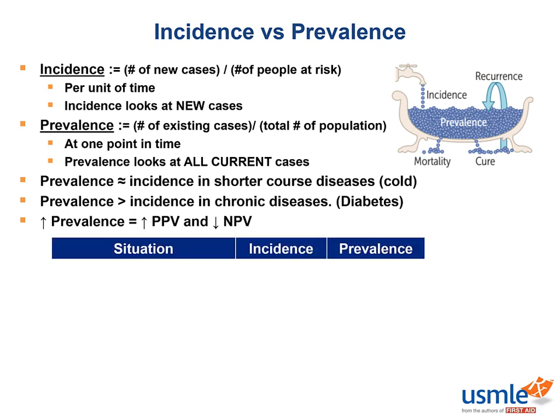Now let's go over a few examples and figure out if each scenario would indicate a change in incidence, prevalence, or both. What would an increase in survival rate do to the population? Prevalence would go up, because people with the disease are living longer, more incidents are being added, and fewer people are dying from the disease.